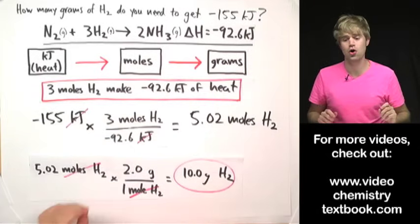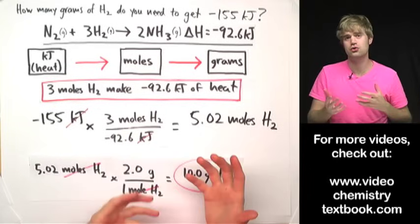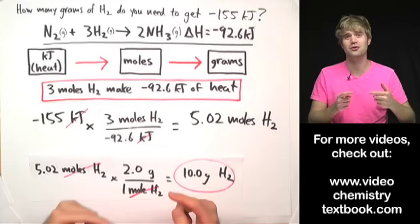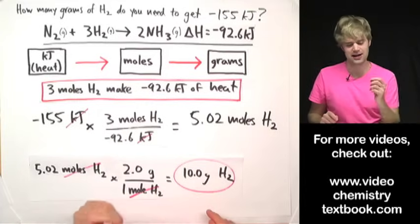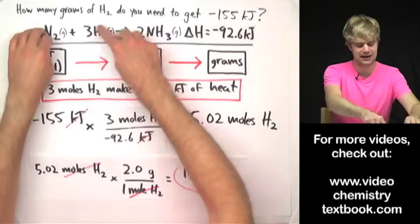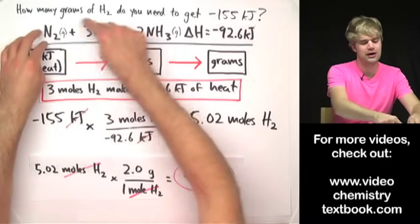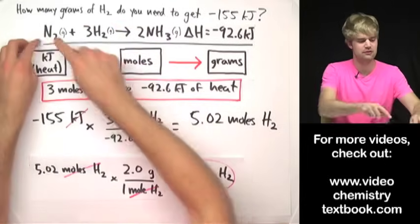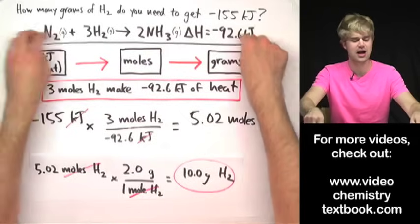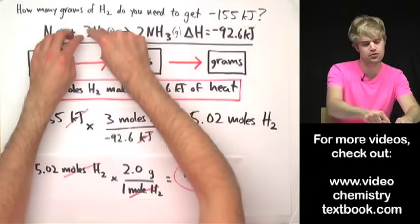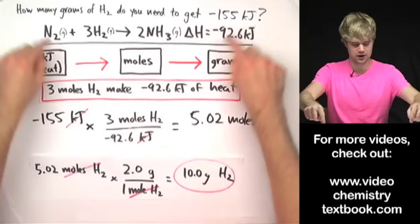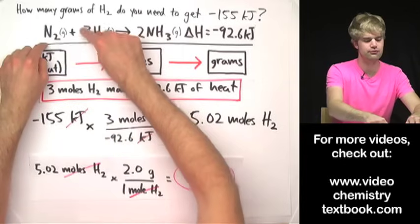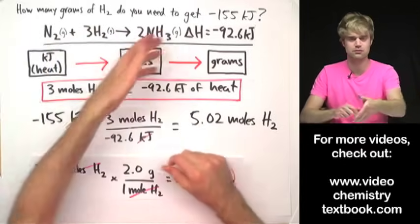Two important things to keep in mind: first, when you start with grams, convert to moles first — grams are not directly useful. Second, and even more important, look carefully at the coefficient in front of each chemical in the equation. If it says 1, then 1 mole of that substance makes the given heat. If it says 3, you need 3 moles to make that much heat. The conversion factor you use depends on the coefficient in front of the reactant or product in the equation.